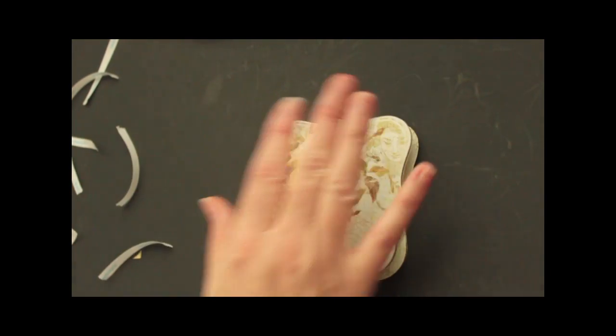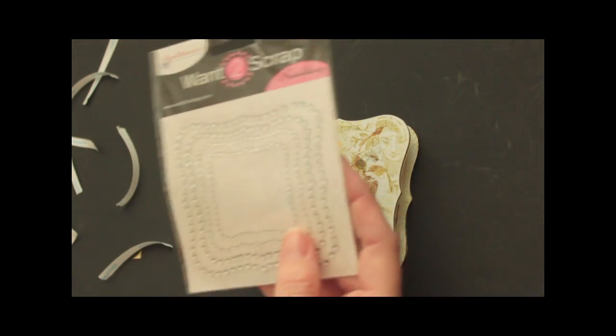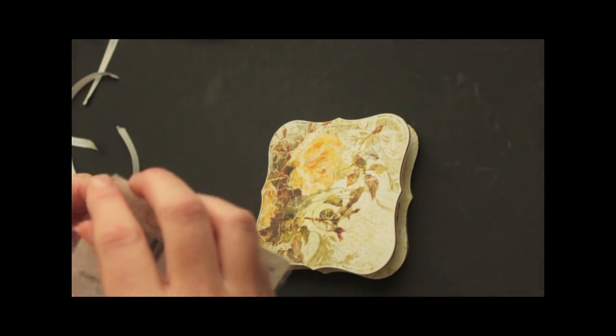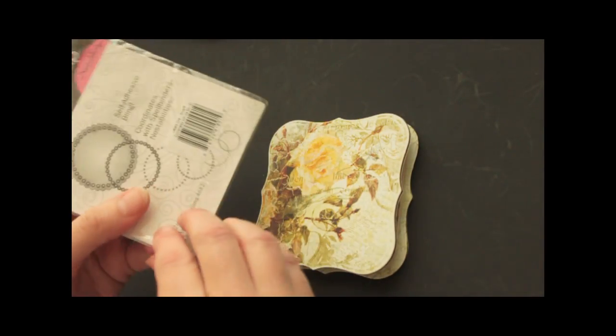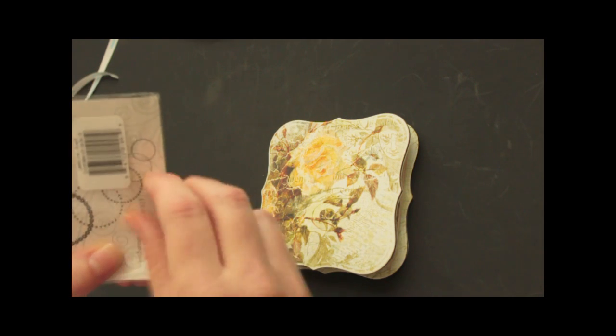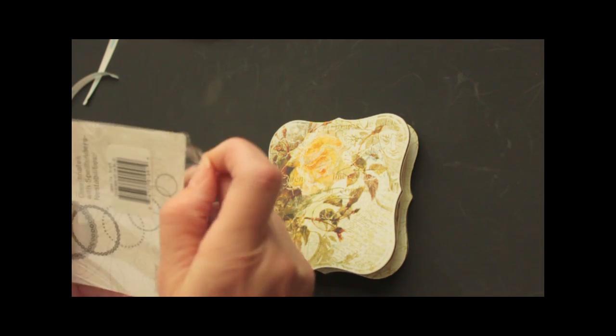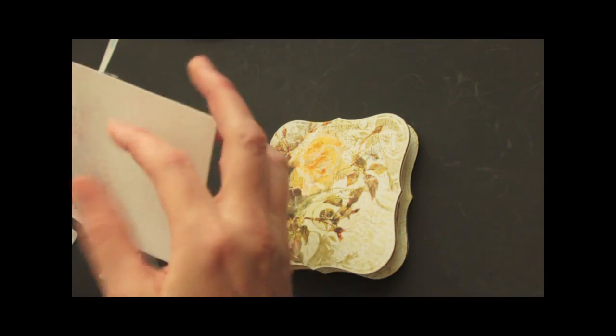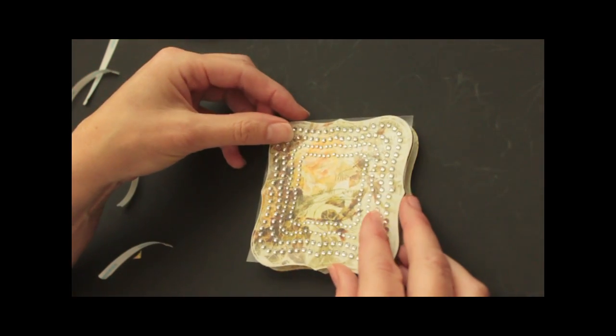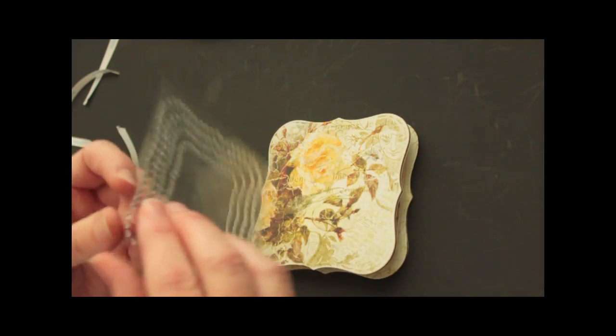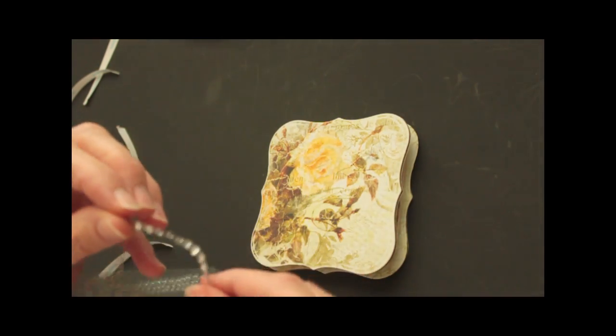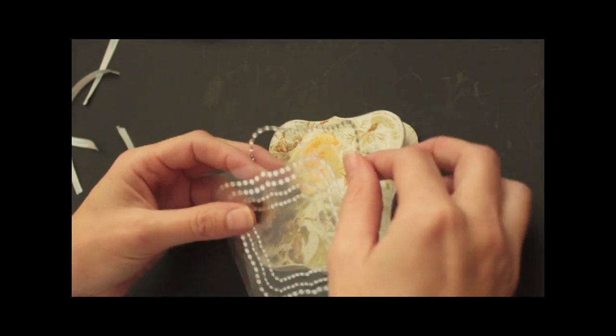Now another really cool product from Want to Scrap is their Nesta Bling. They don't have just chipboard that matches the Nestability shapes, but also rhinestones and pearl shapes. And you can see how great this fits. So I'm going to add a frame to my front.